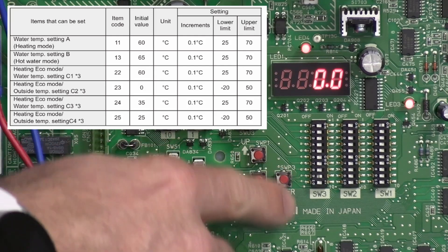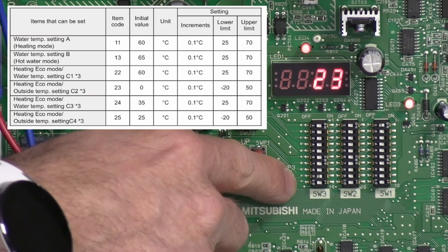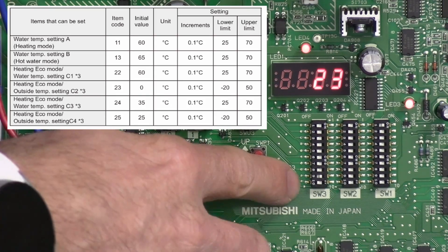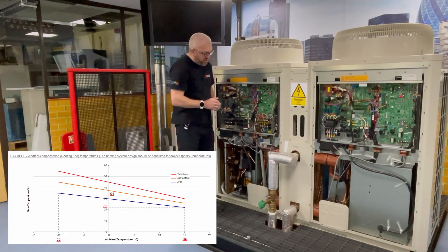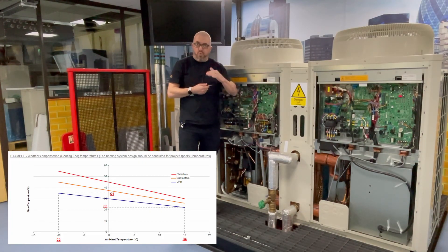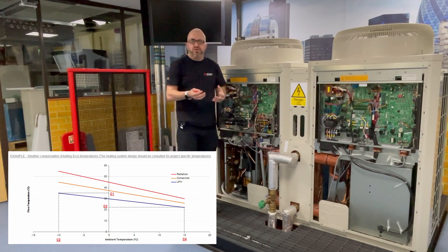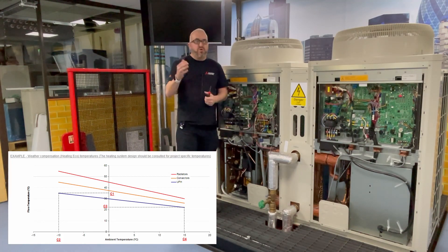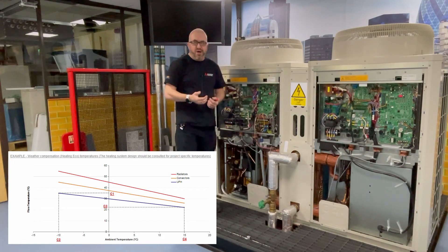So the next one we need to set the other end of the scale, so it's item 24. We now need to set the lower water temperature, so the minimum water temperature the system is going to operate when it's quite a mild or warm day outside.